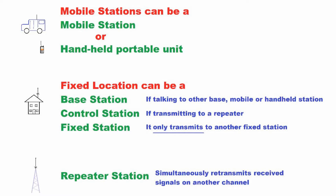Then we have stations that are at fixed locations. This can be a base station, a control station, or a fixed station. Notice that fixed station and fixed location are two different terms. A base station is considered a base if you're talking to another base station, a mobile, or a handheld station.